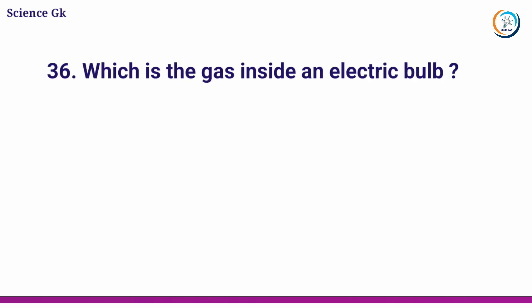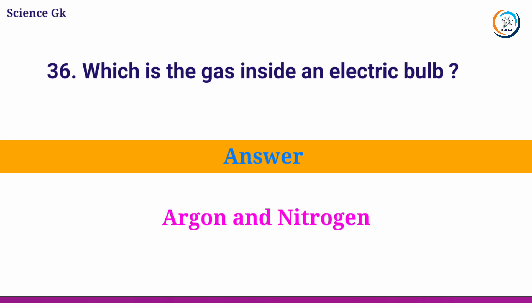Which gas is inside an electric bulb? Answer: argon and nitrogen.